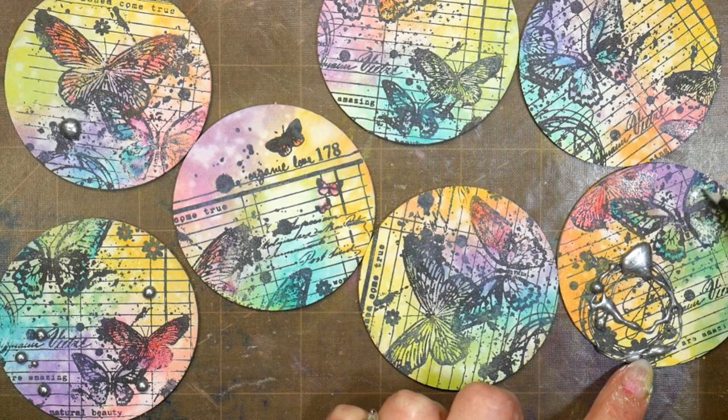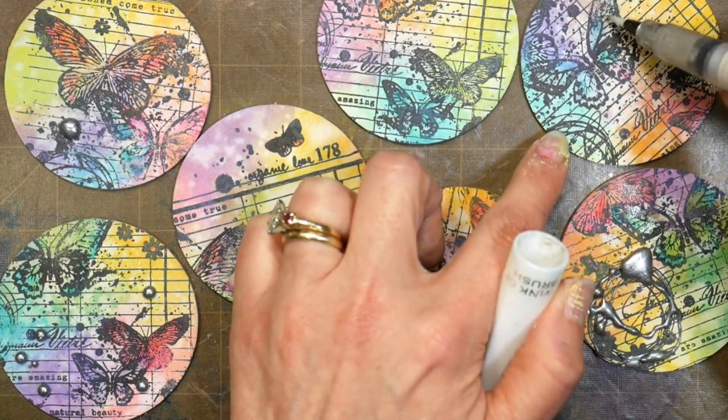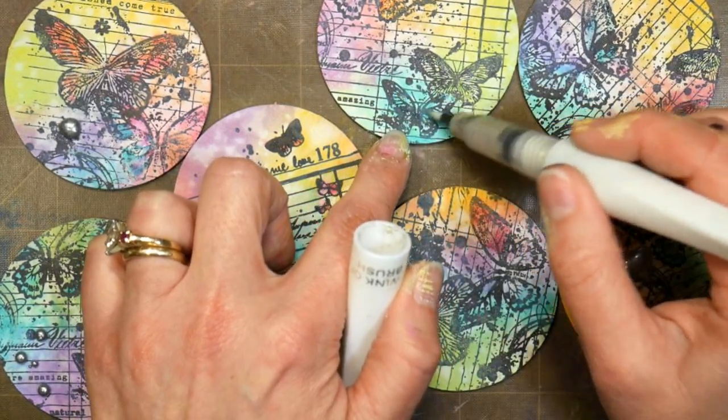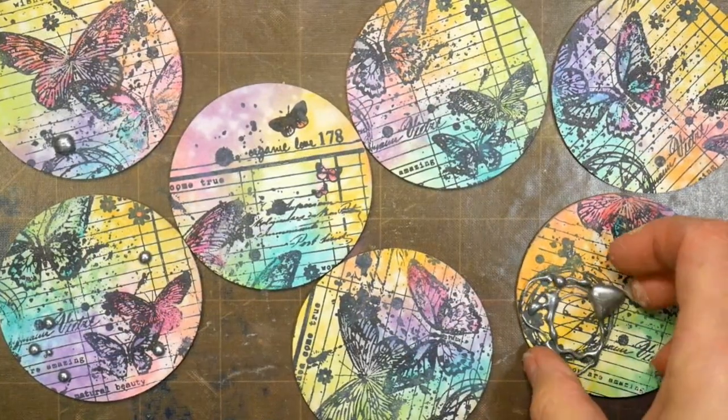If you don't have this you could use Pearl X, any metallic watercolors, or even metallic eyeshadow. Any of that stuff with mica in it will give you that little bit of shimmer and be so pretty. You don't have to buy the expensive stuff.